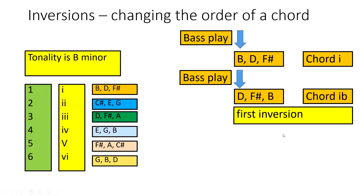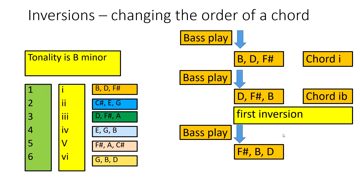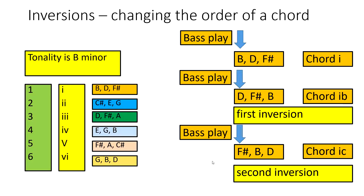Now if we play the B minor chord with F sharp in the bass, the D has gone to the back of the queue and F sharp is now at the front. This is still chord I but we now put a small 'c' beside it — this is called second inversion. The B and the D have gone to the back of the queue, meaning the last note F sharp is now at the front. You can identify second inversion by the little 'c' beside the Roman numeral.